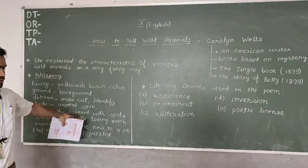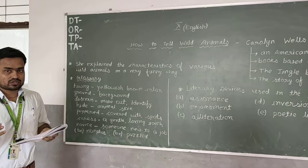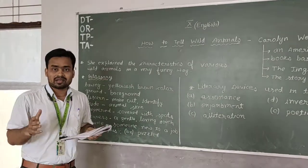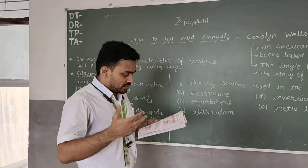I have mentioned here, you can find out. So in the first stanza, the poetess talked about identification of the Asiatic lion. In the second stanza, she talks about how to identify the Bengal tiger.